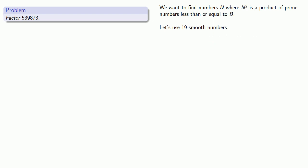Since square root of 539873 is approximately 734.76, we'll start with n equals 735 and work our way up.